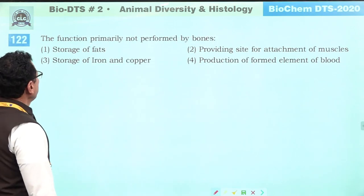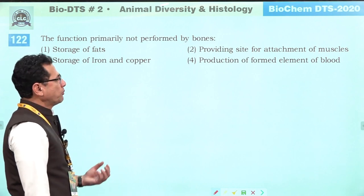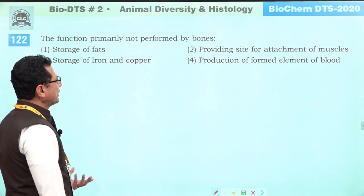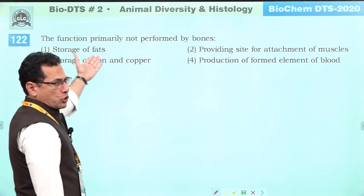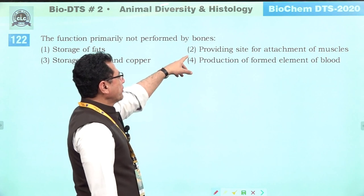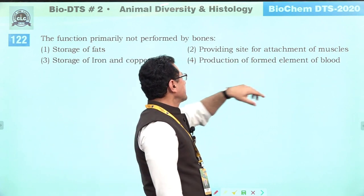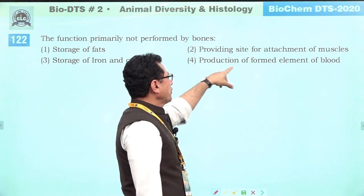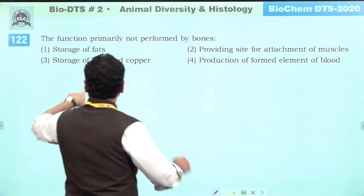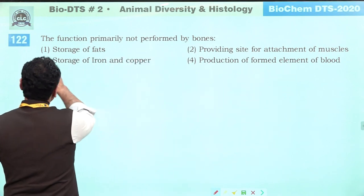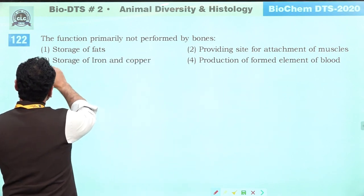Function primarily not performed by bones: bones store fat (yellow bone marrow), provide attachment sites for muscles, and produce formed elements of blood. Bones do not store iron or copper. Answer is three.